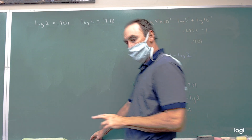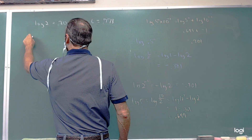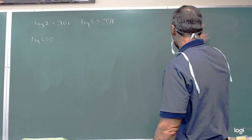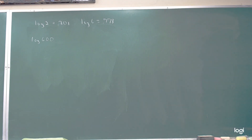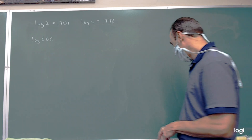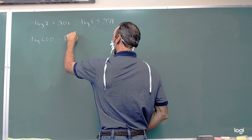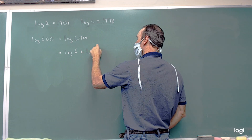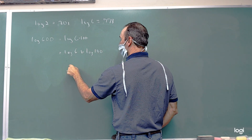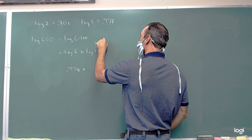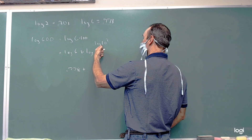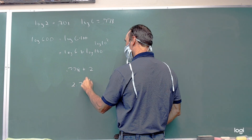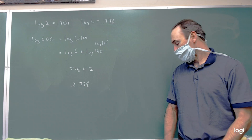Let's do one more: the log of 600. We think of 600 as 6 times 100, so it becomes log of 6 plus log of 100. Log of 6 is 0.778, and log of 100 is log of 10 squared — since logarithm base 10 and exponential base 10 cancel, that's 2. So 0.778 plus 2 gives us 2.778.